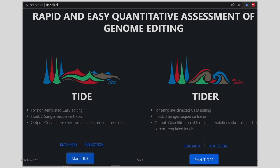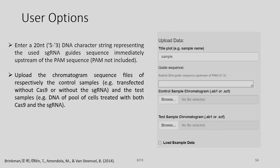Users can start either program and enter a 20-nucleotide 5' to 3' DNA string representing the single guide RNA sequence immediately upstream of the PAM sequence — the PAM should not be included. Users then upload chromatogram sequence files for both a control sample, such as cells transfected without Cas9 or without sgRNA, and a test sample, such as DNA from a pool of cells treated with both Cas9 and sgRNA.